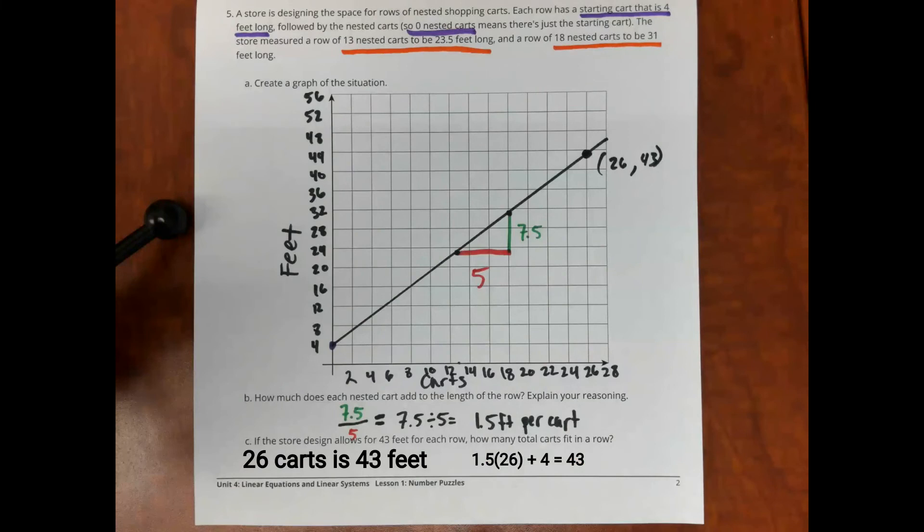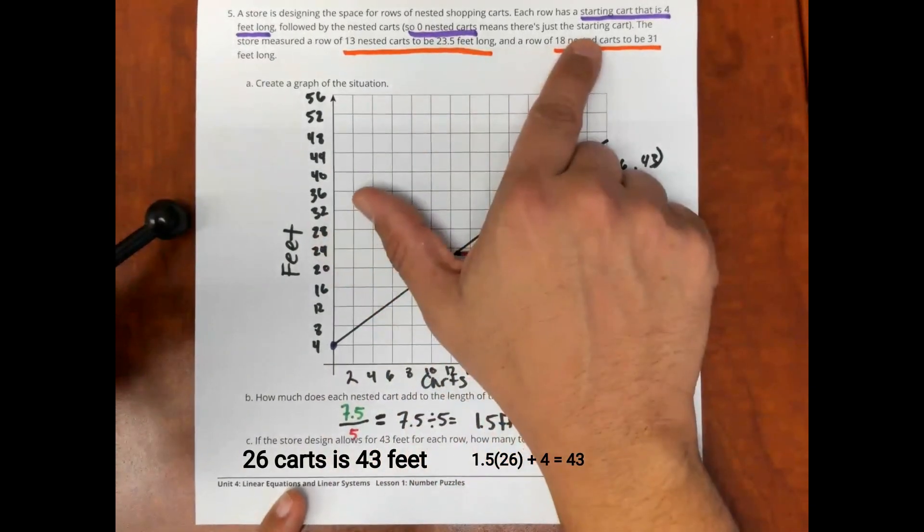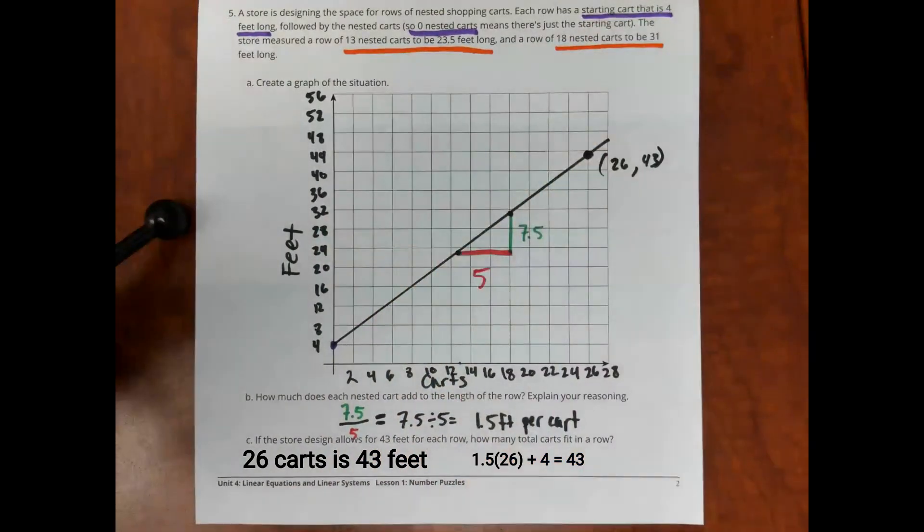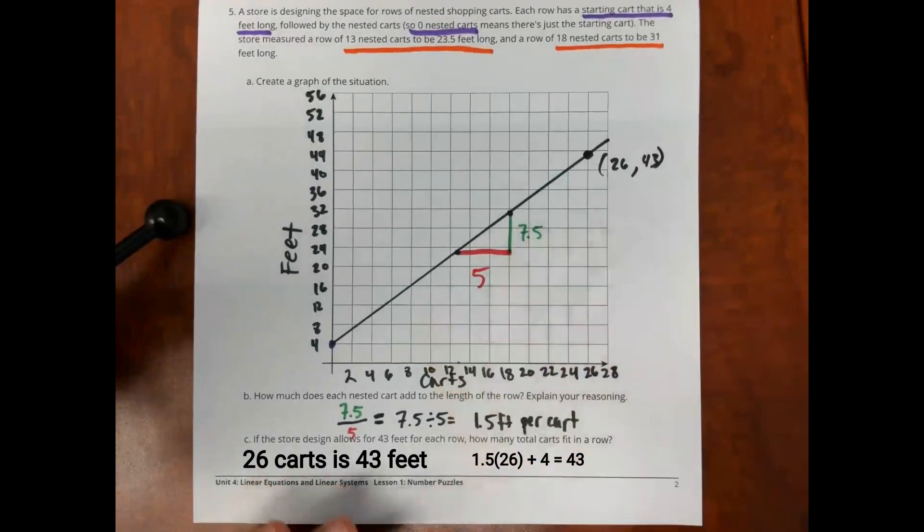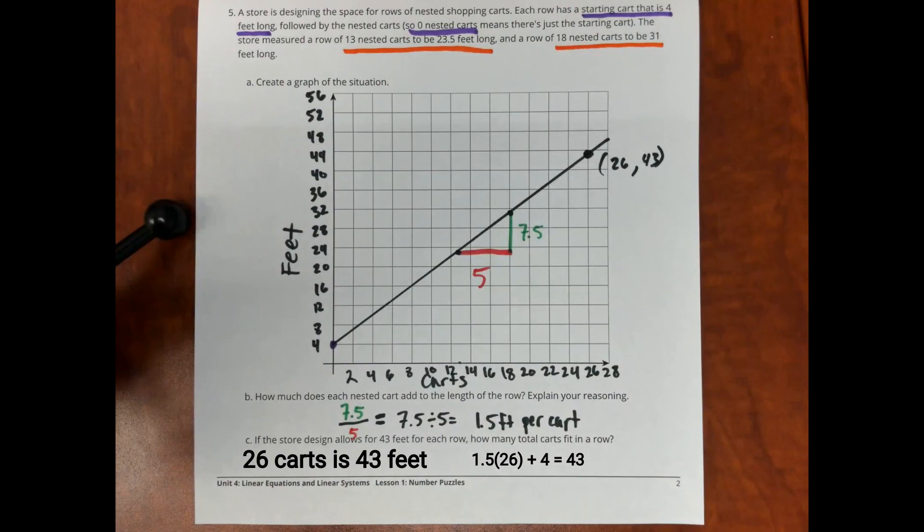All right. It's a good review problem here on the previous unit. Just remembering here that because there is zero carts means four feet long that it's not proportional. So, you have to draw the graph and then draw a slope triangle. All right. Thank you, ladies and gentlemen.